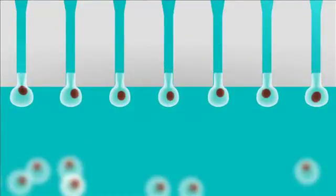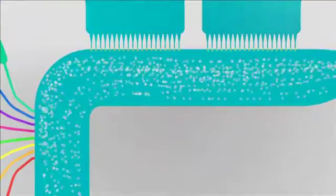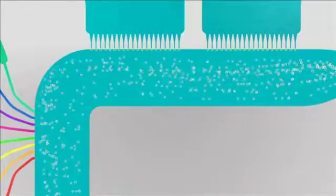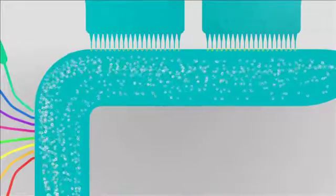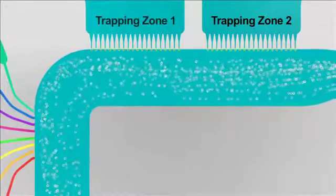Once the cell is attached, whole cell voltage clamp is achieved. The IonFlux system uses ensemble recording to provide maximum success rates. Each trapping zone captures 20 cells which are used to make one patch clamp recording. There are two trapping zones per experimental pattern.